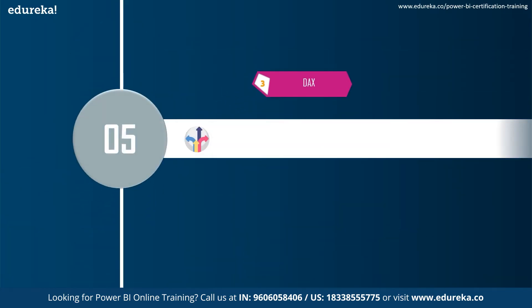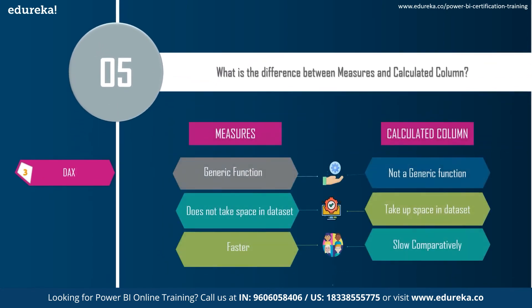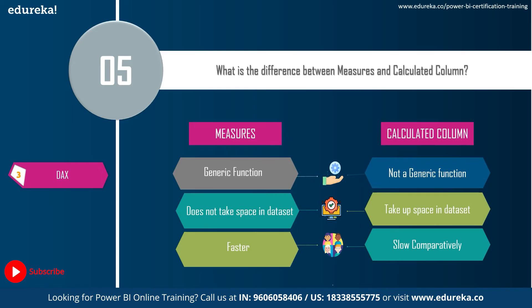The next question is: what is the difference between measures and calculated columns? A measure is a generic function that does not get stored in the data set — it is just a calculation applied when dragged onto a visual. A calculated column, on the other hand, adds a new column to the data set and takes up storage space. Measures do not take up space in the data set, but calculated columns do. Measures are also faster, whereas calculated columns are comparatively slower.